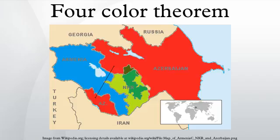An unavoidable set is a set of configurations such that every map satisfying some necessary conditions for being a minimal non-four-colorable triangulation must have at least one configuration from this set. A reducible configuration is an arrangement of countries that cannot occur in a minimal counterexample. If a map contains a reducible configuration, then the map can be reduced to a smaller map. If the smaller map can be colored with four colors, then the original map can also. Using mathematical rules based on properties of reducible configurations, Appel and Haken found an unavoidable set of reducible configurations, proving that a minimal counterexample to the four-color conjecture could not exist. Their proof reduced the infinitude of possible maps to 1,936 reducible configurations, checked one by one by computer, taking over a thousand hours.